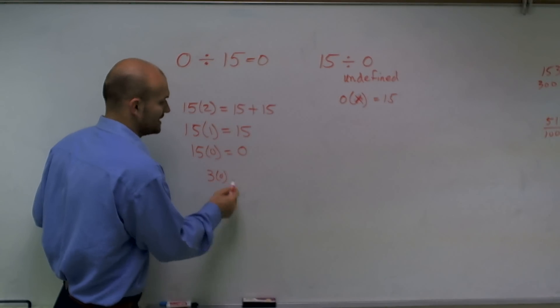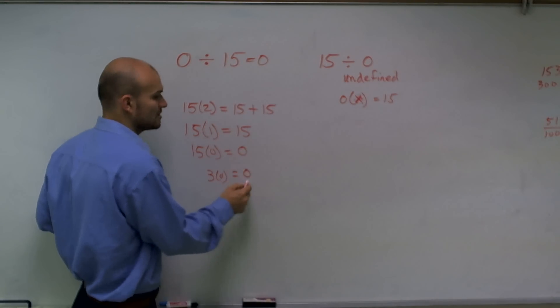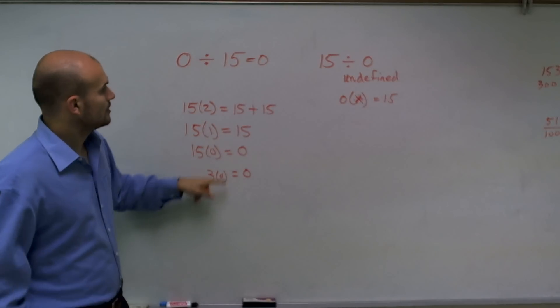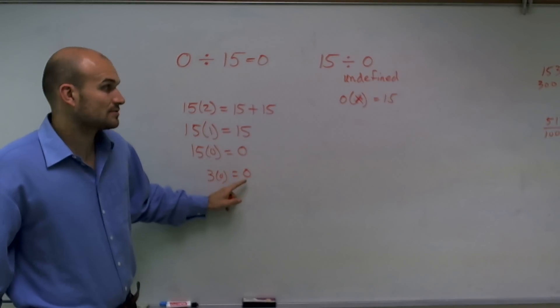3 times 0 would mean 0 threes to add, so I just have 0. Therefore, any number times 0 always equals 0.